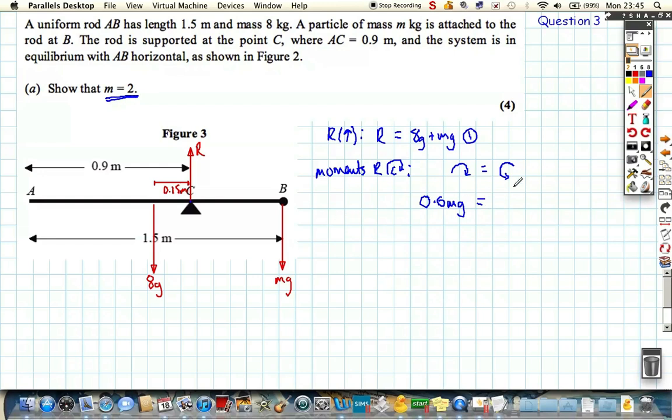Must be equal to 0.15, that distance multiplied by 8g, acting on the other direction. So we can see straight away that they're the only forces that are acting, we can cancel g's out. We've got 0.6m is equal to 0.15 times by 8, it's 1.2, and therefore we've shown straight away that m must be 2 kilograms.